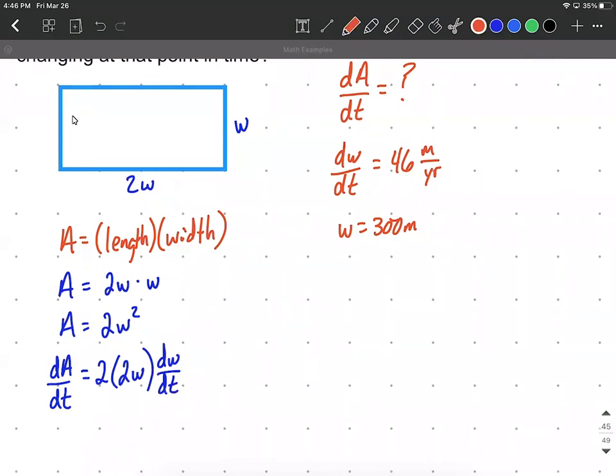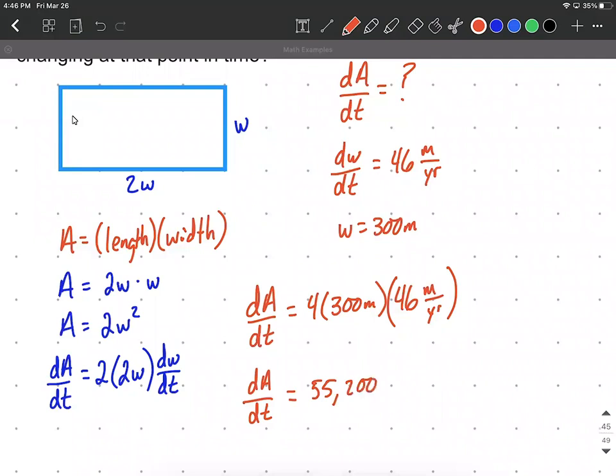All right, from here, let's plug in the information that we know. We're trying to find dA/dt, so we'll leave that over on the left-hand side. Then we have 2 times 2 makes 4. W in our case is 300 meters, and then dW/dt was given up above to be 46 meters per year. So with a little multiplying here, we have dA/dt is going to be 4 times 300 times 46, which works out to be 55,200, and multiplying our units, we get meters squared per year.